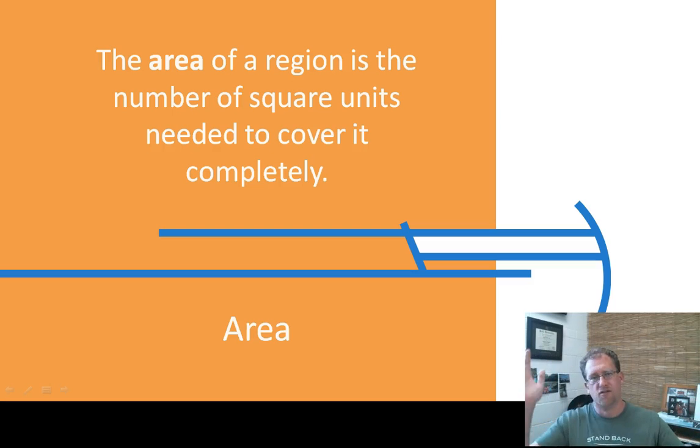Even if the room is curvy and strange shaped, these tiles still come in squares. And so we have to see how many tiles would you need to cover this floor. So Area is always in square units, and it's how many of those square units we need to cover a region, usually a polygon, in what we're going to be doing.